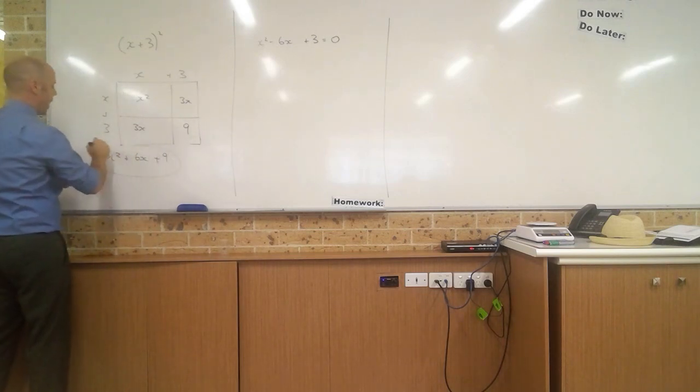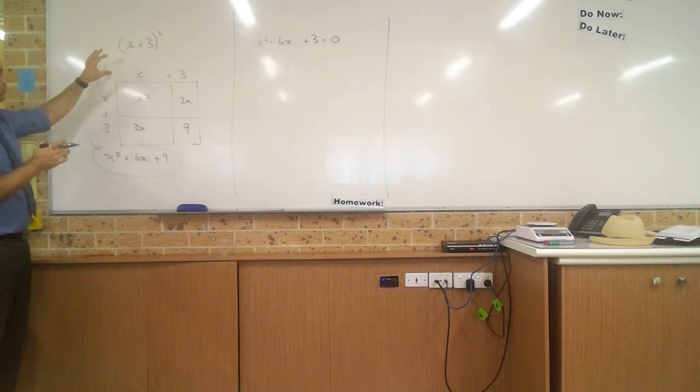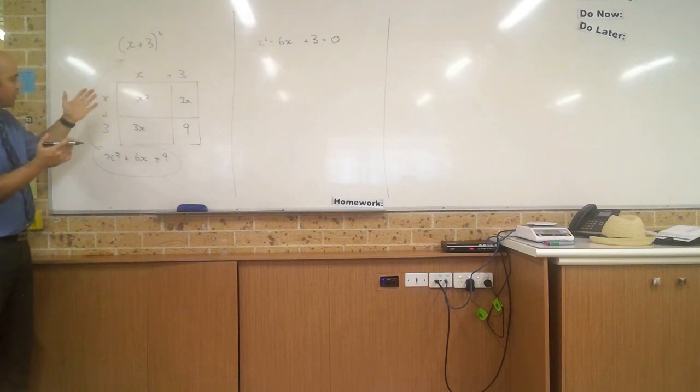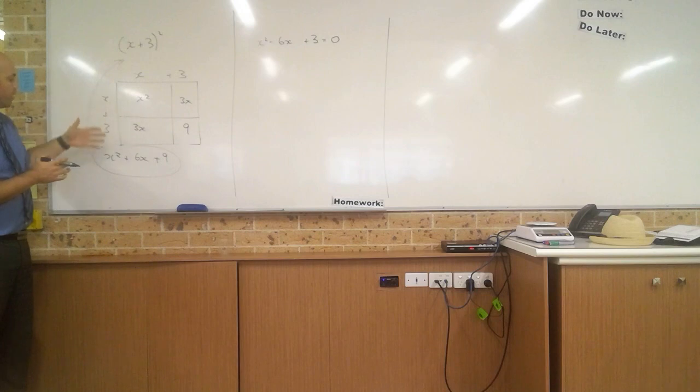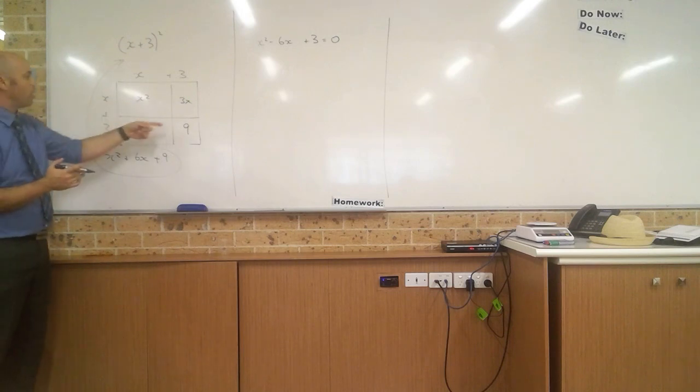And we should recognize that is the same as the direct expansion of x plus 3 all squared. Okay? And so an expression like this, a binomial expression, x and 3, two terms, squared, can be represented on a square shaped like this. So the entire area of this square, for example, would be x squared plus 6x plus 9.